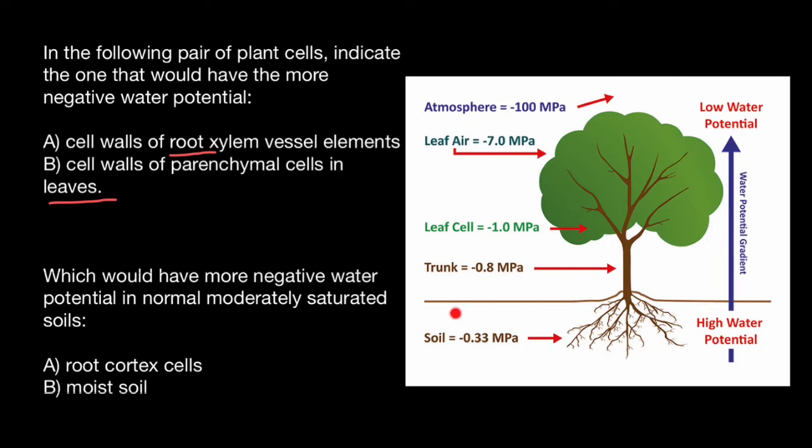For example, in the soil, water potential is minus 0.33 MPa. But in order for the water to go from the root system to the trunk, water potential of the trunk has to be more negative than that of the root system. In our case, minus 0.8 MPa. So this is going to be the driving force, and in the leaves.